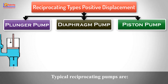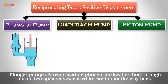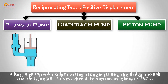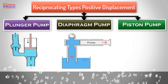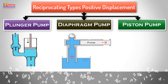Typical reciprocating pumps are plunger pumps. A reciprocating plunger pushes the fluid through one or two open valves, closed by suction on the way back. Diaphragm pumps are similar to plunger pumps, where the plunger pressurizes hydraulic oil which is used to flex a diaphragm in a pumping cylinder.